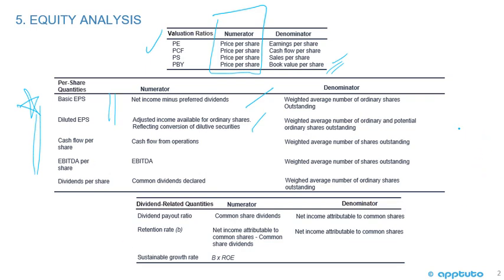Basic and diluted EPS are well covered in the CFA. The denominator for diluted EPS is the weighted number of ordinary shares plus potential ordinary shares outstanding if converted. Cash flow per share uses CFO as the numerator, on a per share basis with the weighted average shares outstanding. EBITDA per share uses EBITDA as the numerator, also divided by the weighted average shares outstanding.